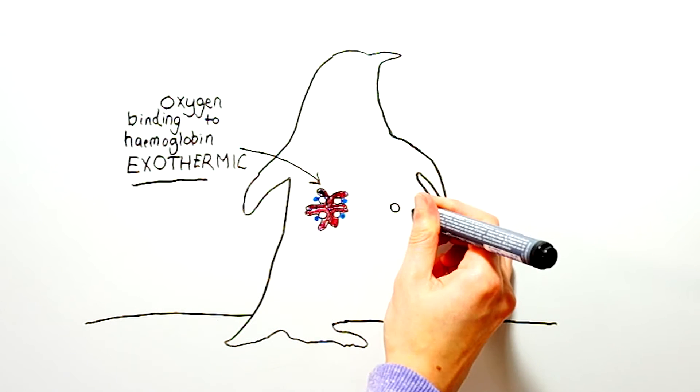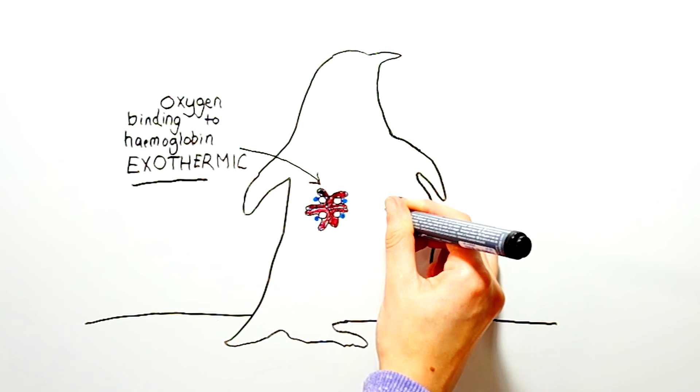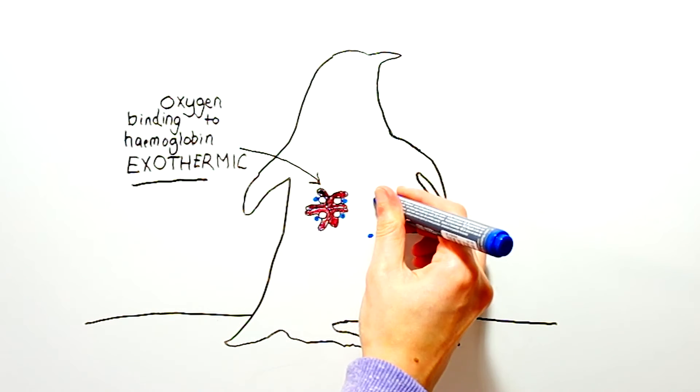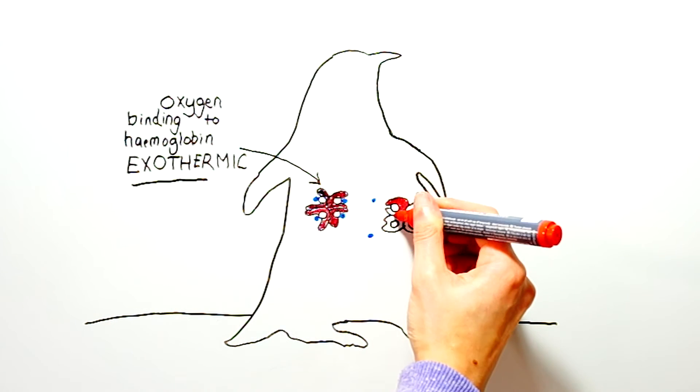Penguins have a very small delta H compared to humans because of their biochemistry, which means that very little heat is lost through the unbinding and binding of oxygen.